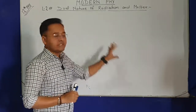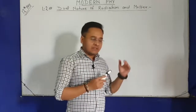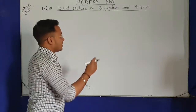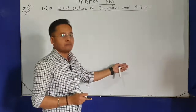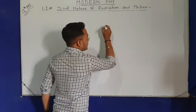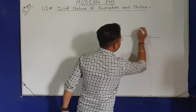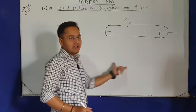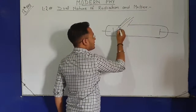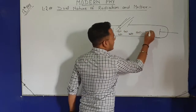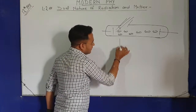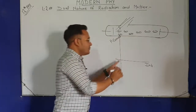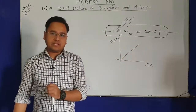This is lecture number two of the topic 'Dual Nature of Radiation and Matter'. In the last video we learned about work function, the photoelectric effect, and the related experiment. We will continue that lecture. We had the experimental setup with a glass tube connected to a voltage source — light falls on it, causing electron emission, which creates a photo current. We observed that as intensity of light increases, photo current increases.